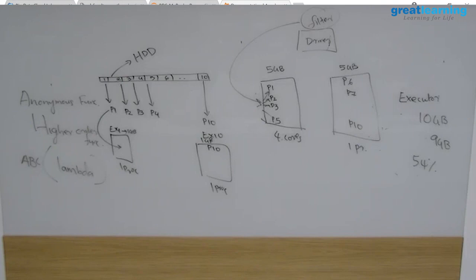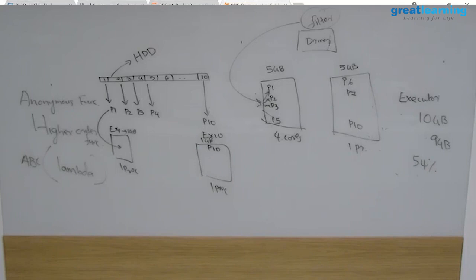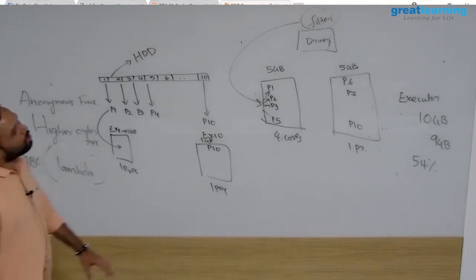If you go to the documentation and scroll down, you'll find the RDD Programming Guide. This covers the Resilient Distributed Dataset — the RDD we've been creating theoretically. Once you create an RDD, you can see the RDD operations available. That's where you start writing your functions — anonymous functions — and you'll find all the transformations listed there.